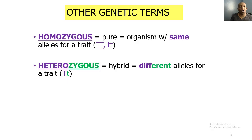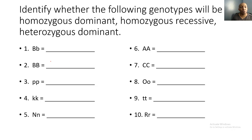Let's take a look at some other genetic terms: homozygous and heterozygous. Homozygous means pure — the organism has the same alleles for a trait. For example, two capital T's or two lowercase t's are both homozygous because both alleles are the same. Heterozygous — 'hetero' means different — is also known as a hybrid. You have different alleles for a trait, for example a capital T and a lowercase t.